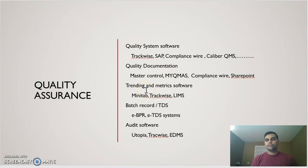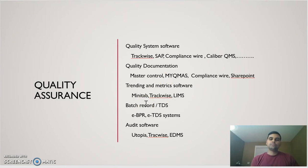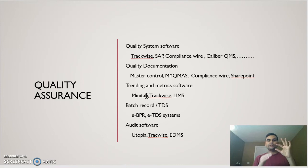Quality assurance also uses software for trending and metrics — tracking quality performance, whether specifications are consistently met, supplier performance, or if you're approaching out-of-specification or out-of-trend failures. Minitab is one example: you enter batch details and it trends results across hundreds of batches, flagging issues like a water content limit consistently declining. LIMS and TrackWise are also used for trending.